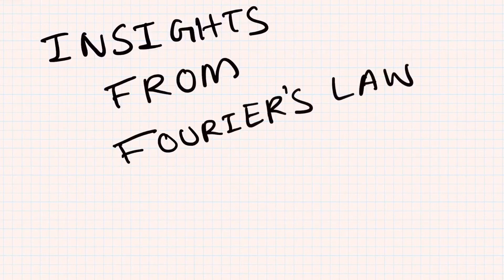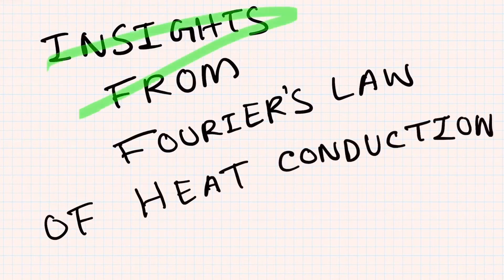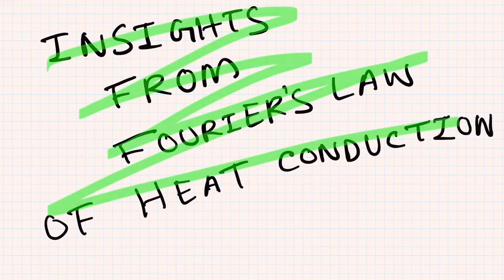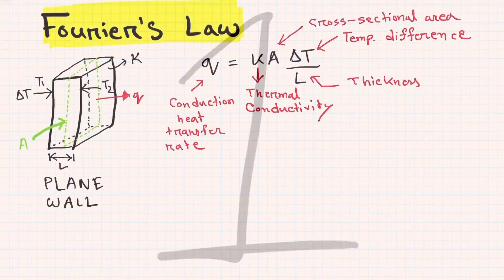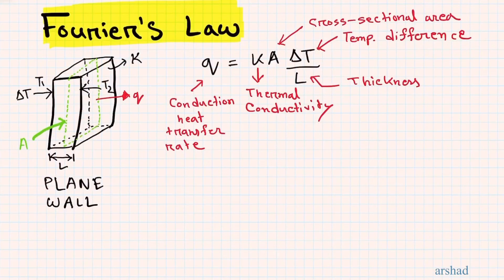In this video we are going to talk about six insights from Fourier's law of heat conduction. Number one: the statement of Fourier's law tells us Q equals K times A times delta T over L, where the symbols have these meanings.